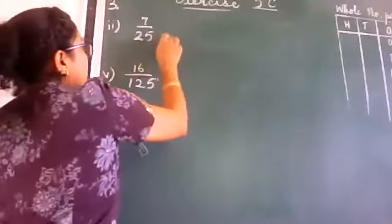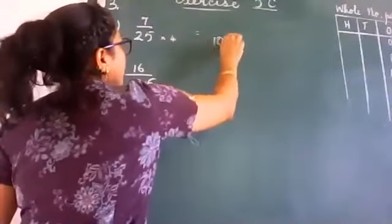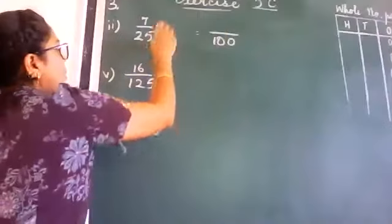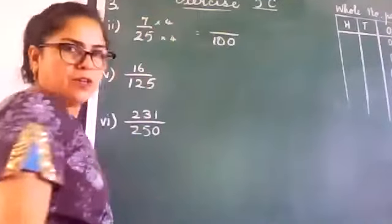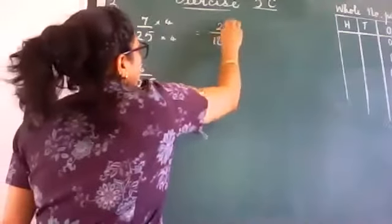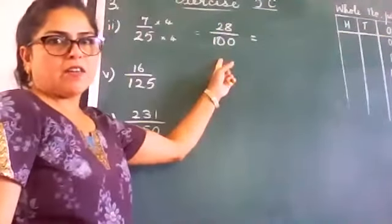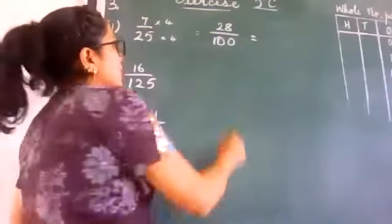So I know that 25 into 4 is 100. Now whatever you do with the denominator, you have to do it with the numerator. So 7 goes up to 28. Now it has become a decimal fraction, easy to convert it into a decimal number.